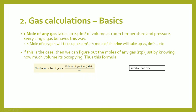The second type is gas calculations. The key idea is that one mole of any gas will take up 24 dm³ of volume at room temperature and pressure. Every single gas behaves this way — one mole of oxygen, one mole of chlorine gas, every single gas will occupy 24 dm³. This means we can figure out the moles of any gas just by knowing the volume it occupies. The formula is: moles = volume ÷ 24. Remember, 1 dm³ = 1000 cm³, so always convert cm³ to dm³ before applying this equation.